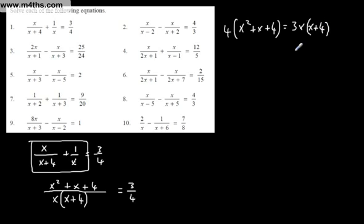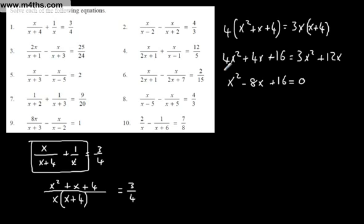We now need to solve this. And look, there's nothing that we can cancel in terms of the numbers. Don't be tempted to cancel these x's. So we can have 4x squared plus 4x plus 16 equals 3x squared plus 12x. So subtracting the 3x squared from both sides, we get x squared. Subtracting the 12x from both sides, we get minus 8x. And then we've got the plus 16, and that's now equal to 0. So we've got a very straightforward quadratic to solve.